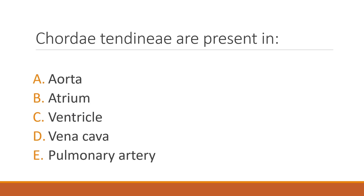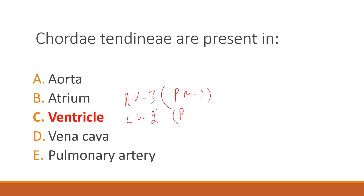Chordae tendineae are present in which structure? The correct answer is option C: ventricles. Chordae tendineae are basically papillary muscles that attach to the flaps. The right ventricle has three flaps and three papillary muscles, while the left ventricle has two flaps and two papillary muscles.